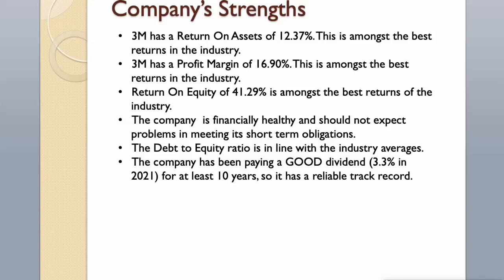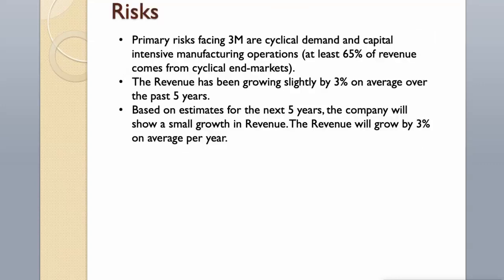Risks: the primary risks facing 3M are cyclical demand and capital-intensive manufacturing operations. At least 65% of revenue comes from cyclical end markets. The revenue has been growing slightly at 3% on average over the past 5 years, and based on estimates for the next 5 years, the company will show only a small growth in revenue.